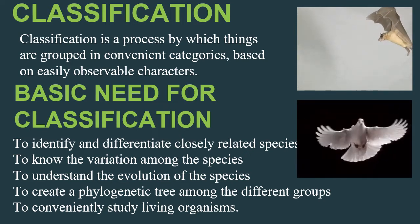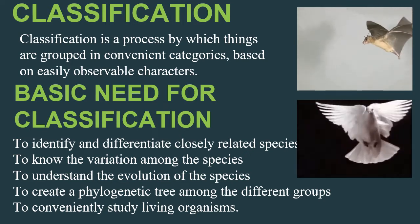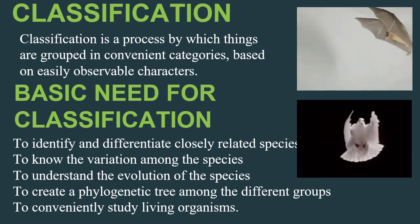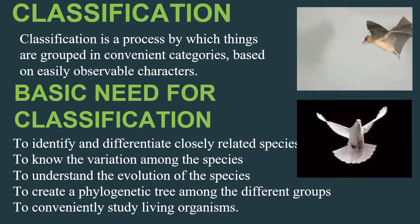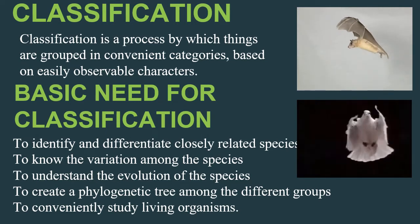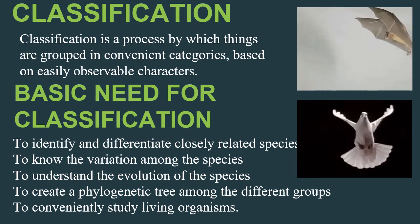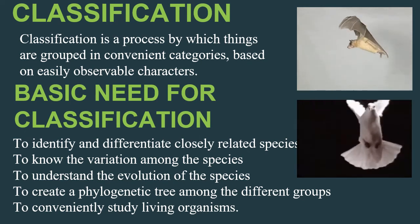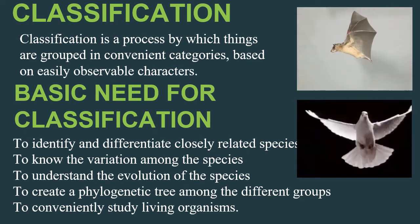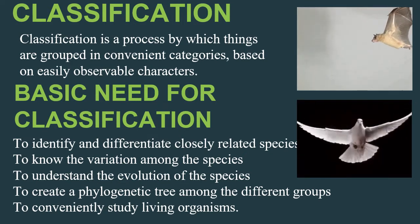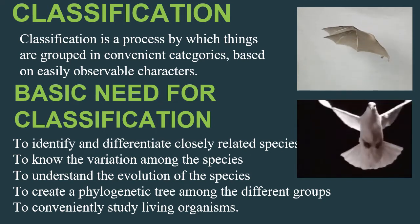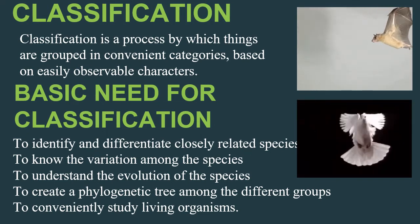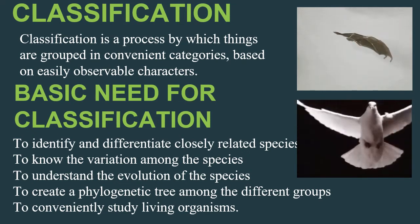We need classification to identify and differentiate closely related species. For example, the cat, tiger, and cheetah all belong to the cat family, but they show differences externally and in feeding habits. You should know the variation, meaning the difference, among species. Classification also helps to compare one species with another and to understand the evolution of species — evolution means a new species is formed from a pre-existing one.